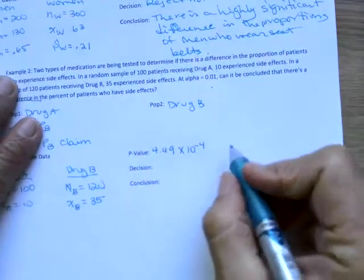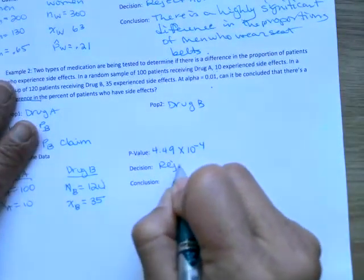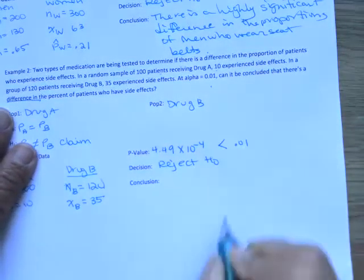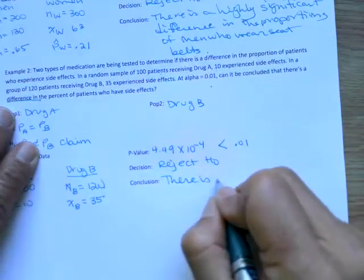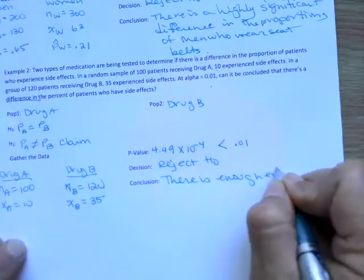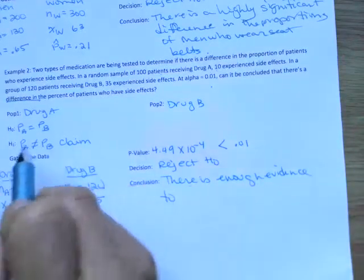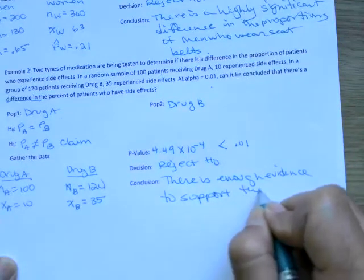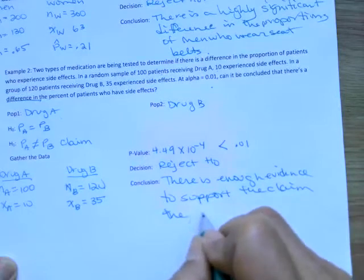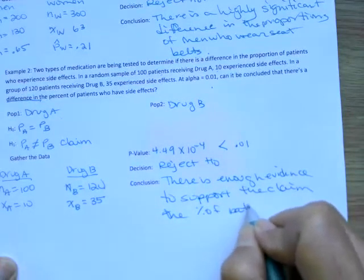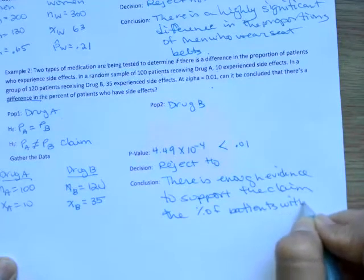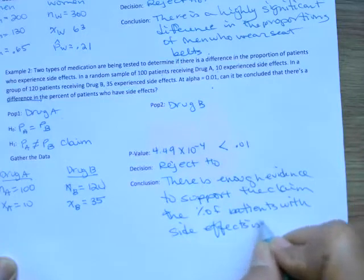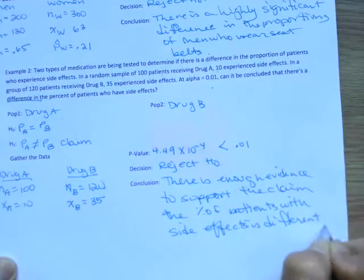Again, a very small P value. So we're going to reject the null hypothesis. That is less than alpha. So we reject the null hypothesis. There is enough evidence. We're rejecting the null, so we're going to support our claim. The percent of patients with side effects is different.